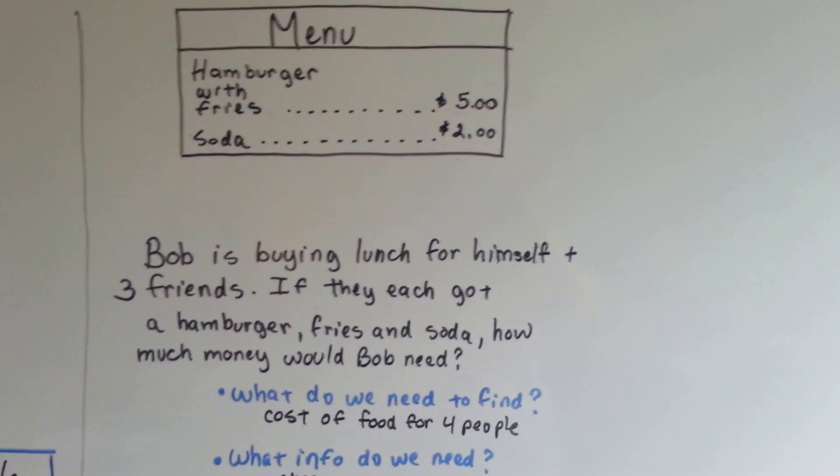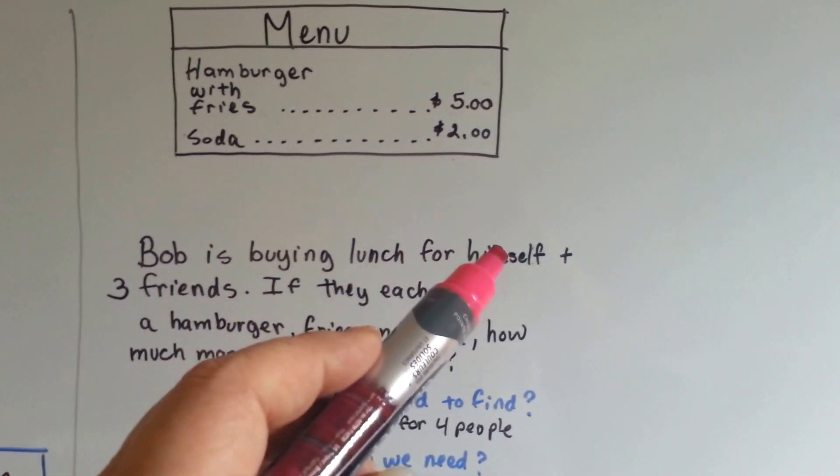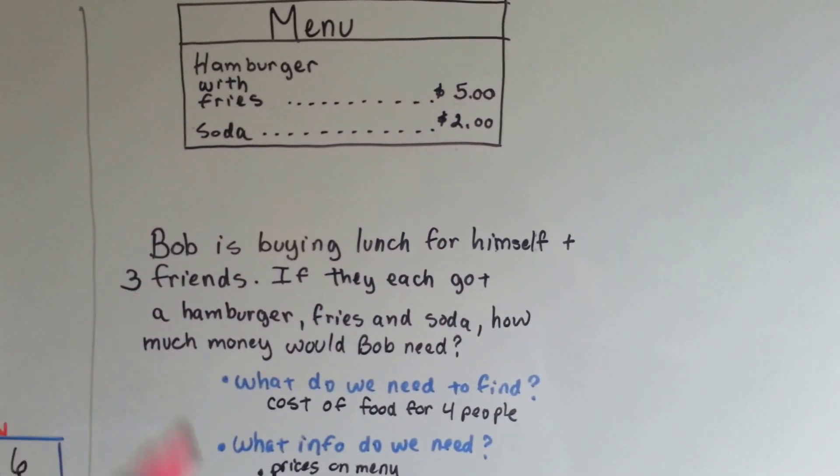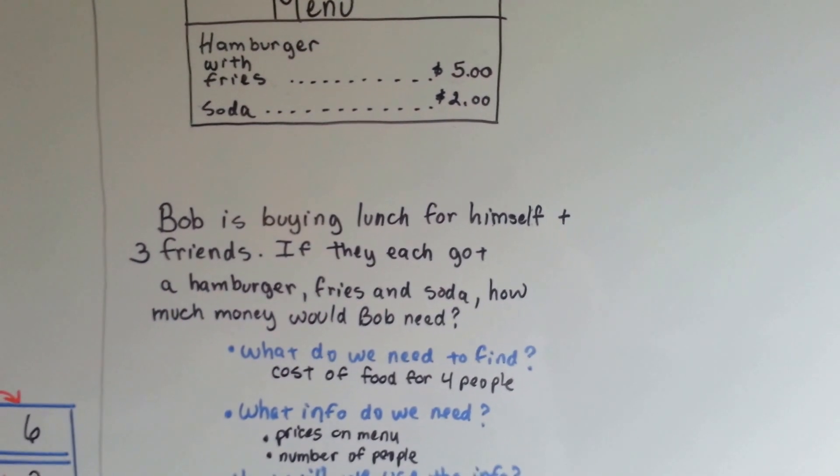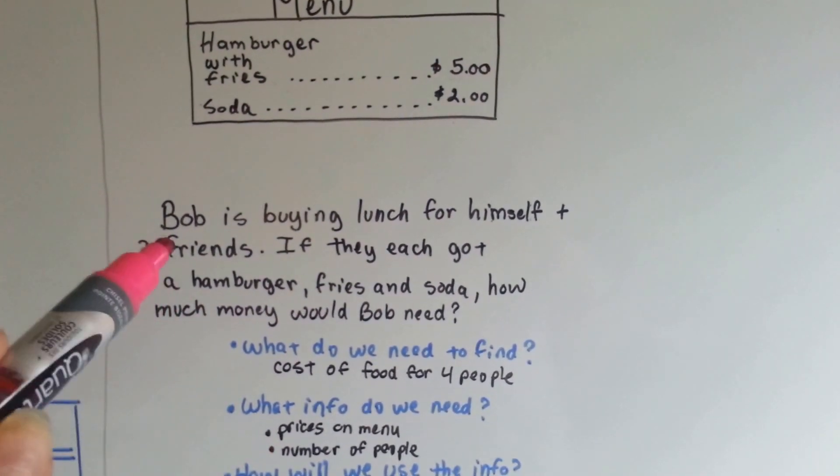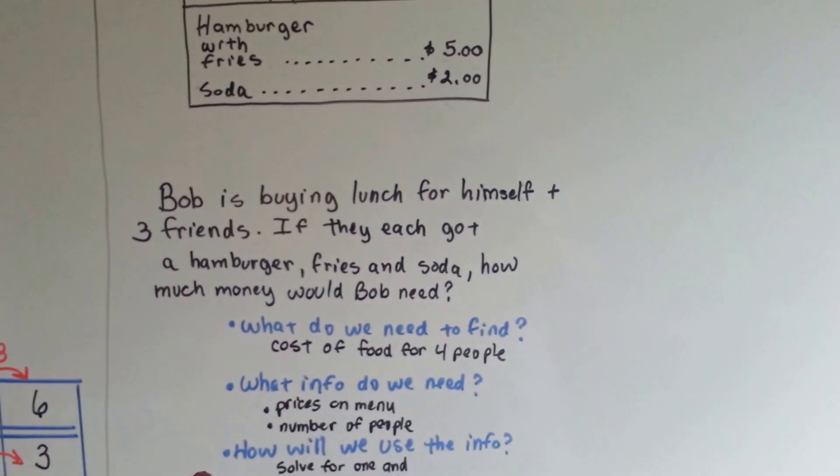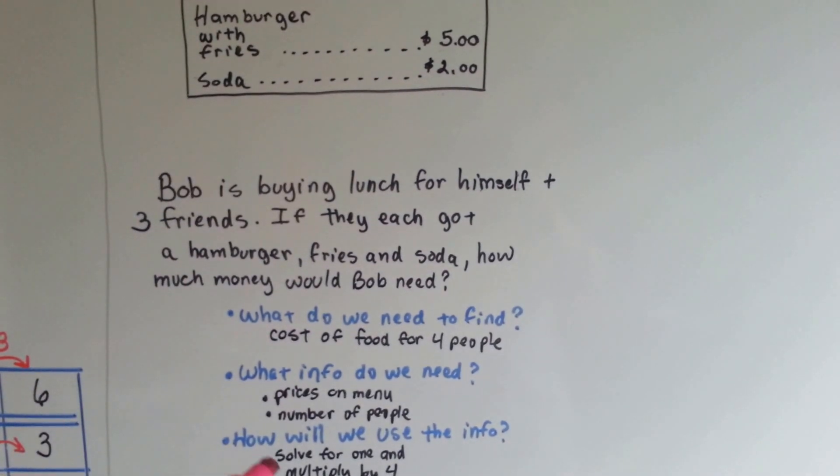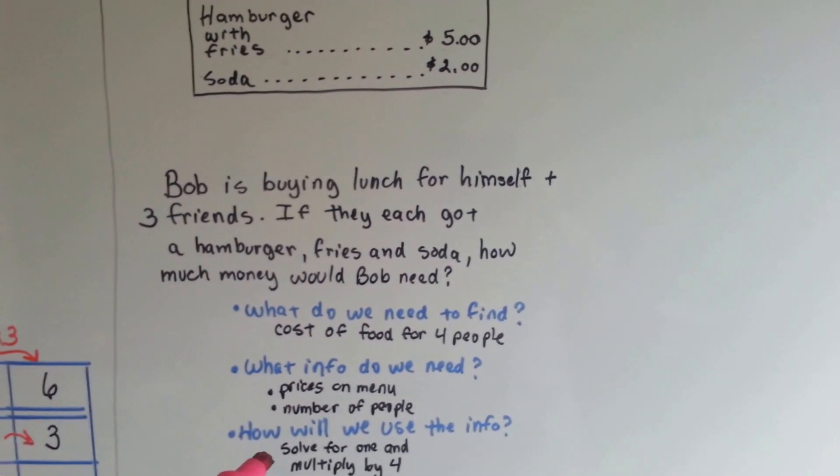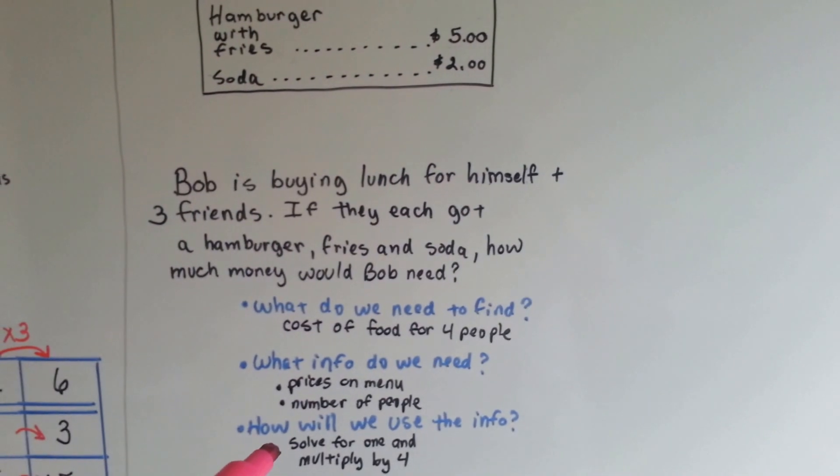Well, what do we need to find? We need to find the cost of food for four people. For himself and three friends. What info do we need? We need the prices on the menu and the number of people. And how will we use the information? We'll solve for one. That's solving a simple problem and breaking it down.